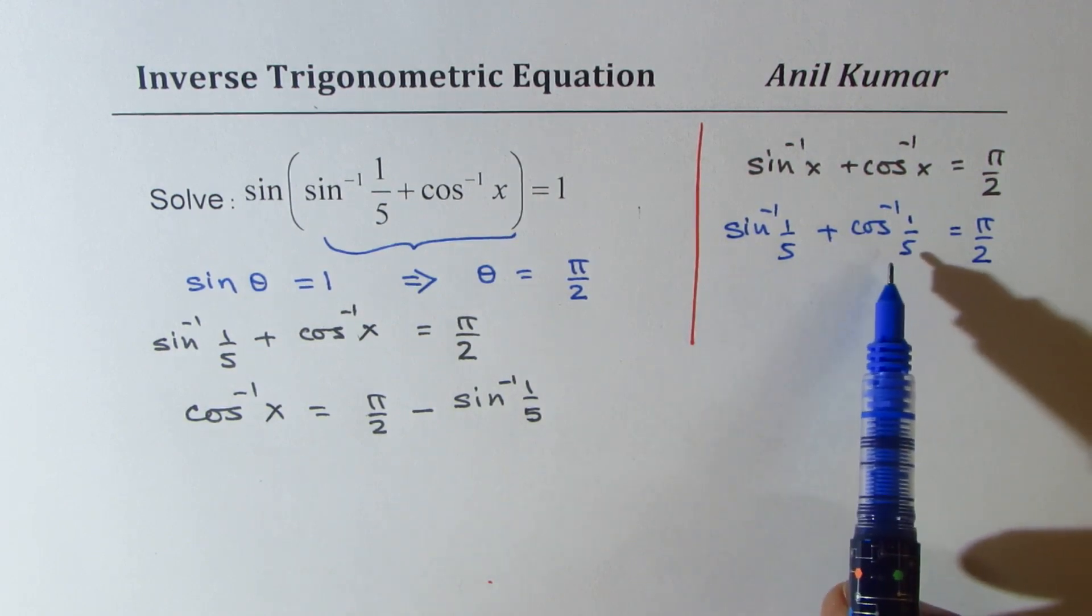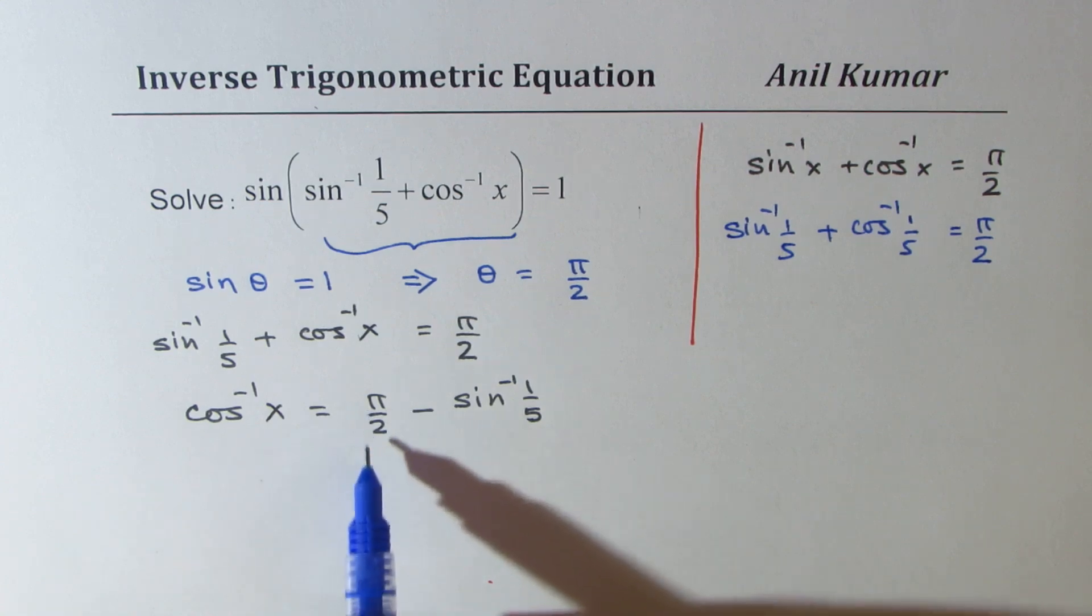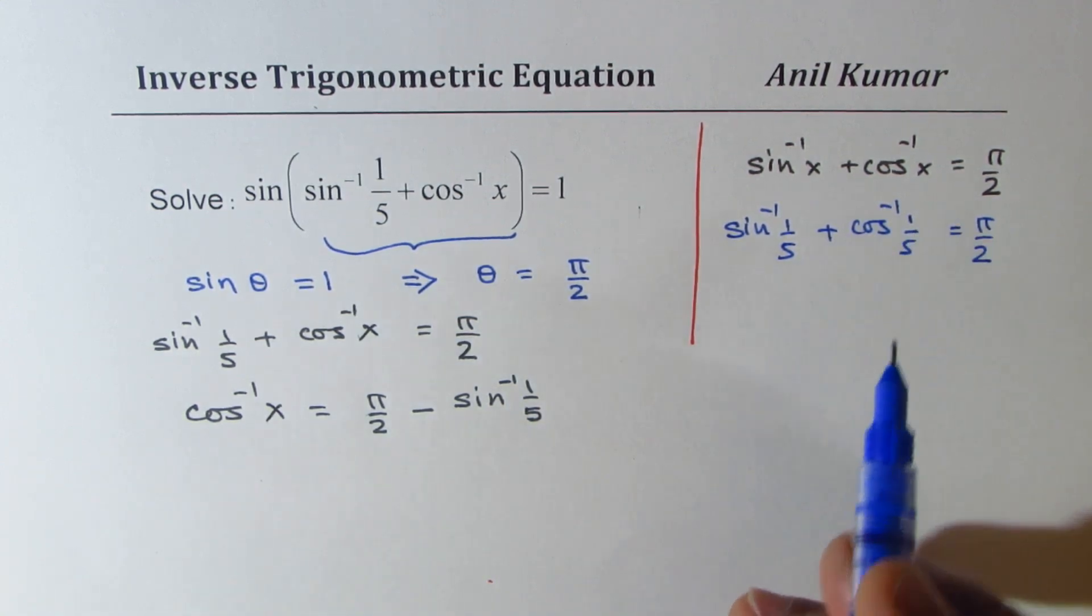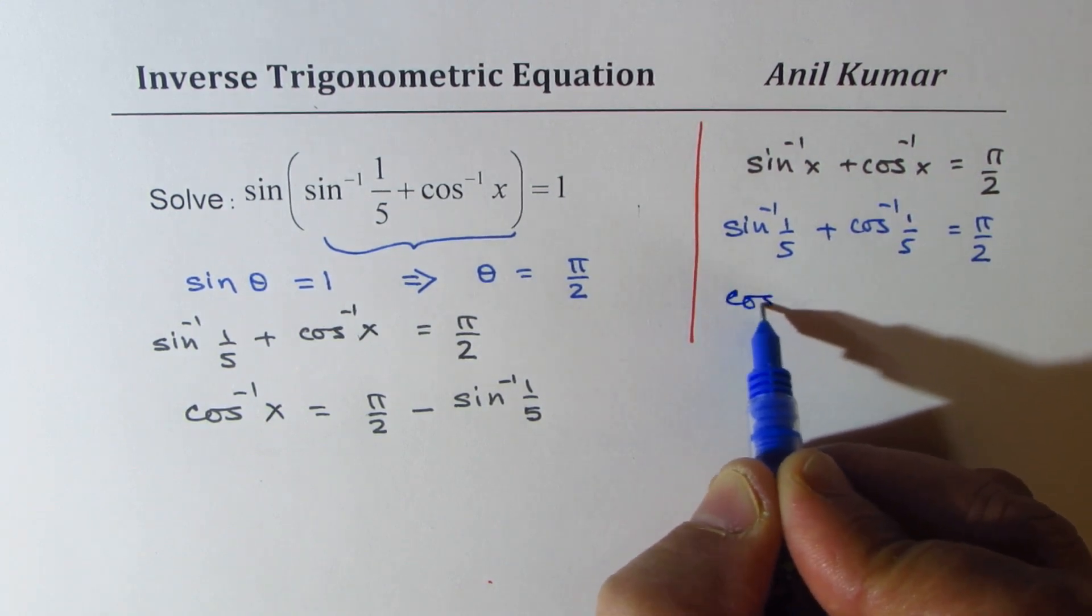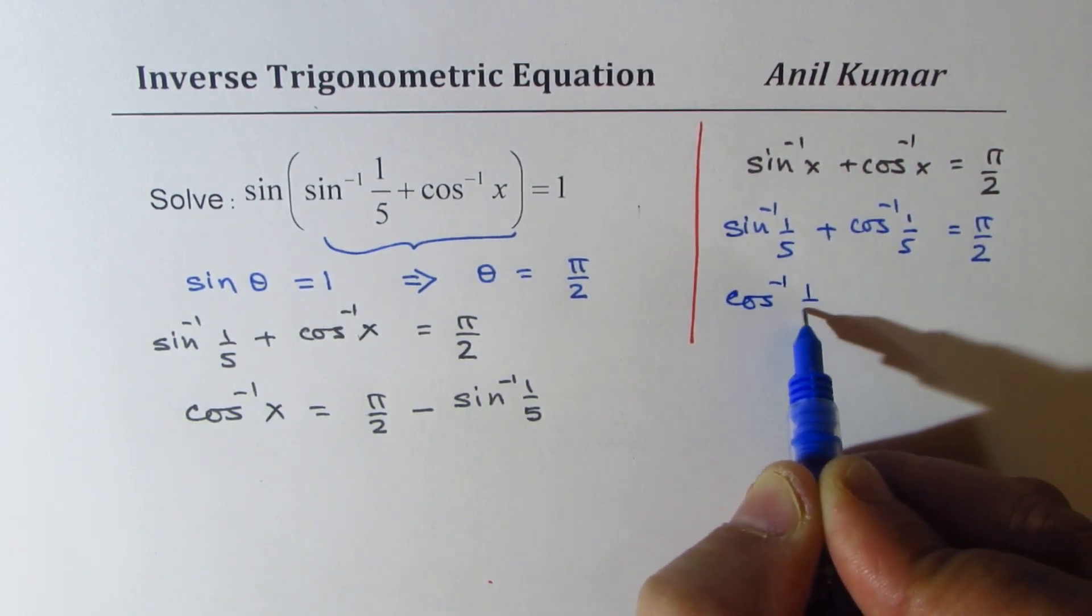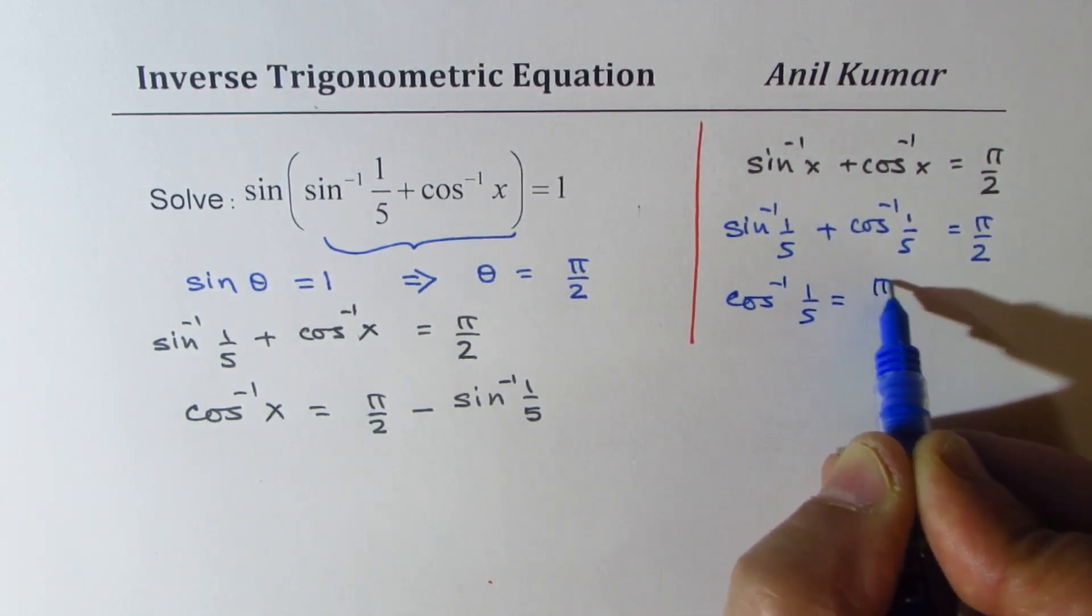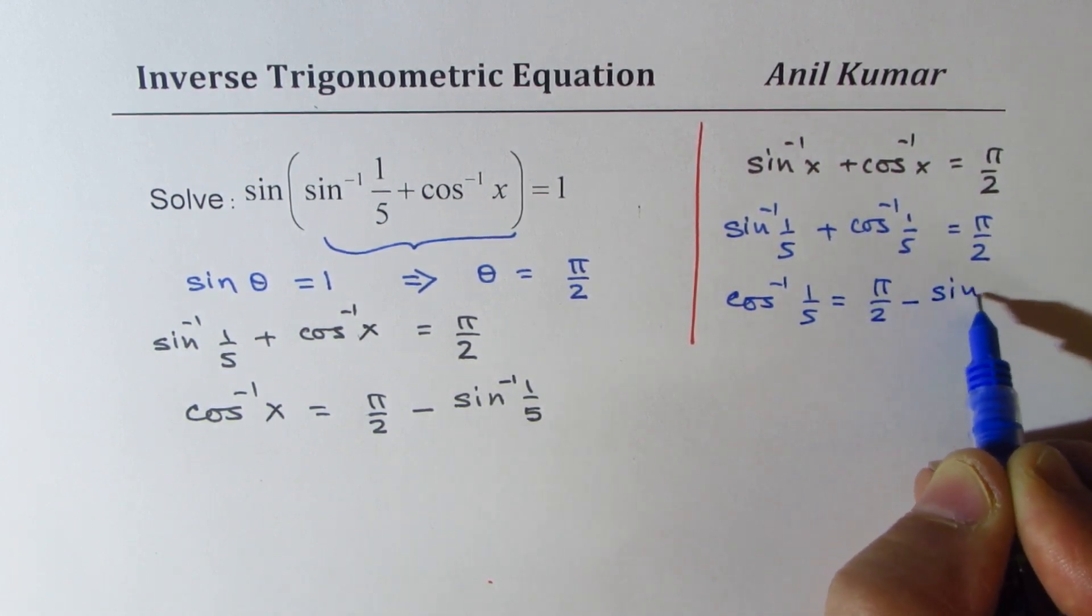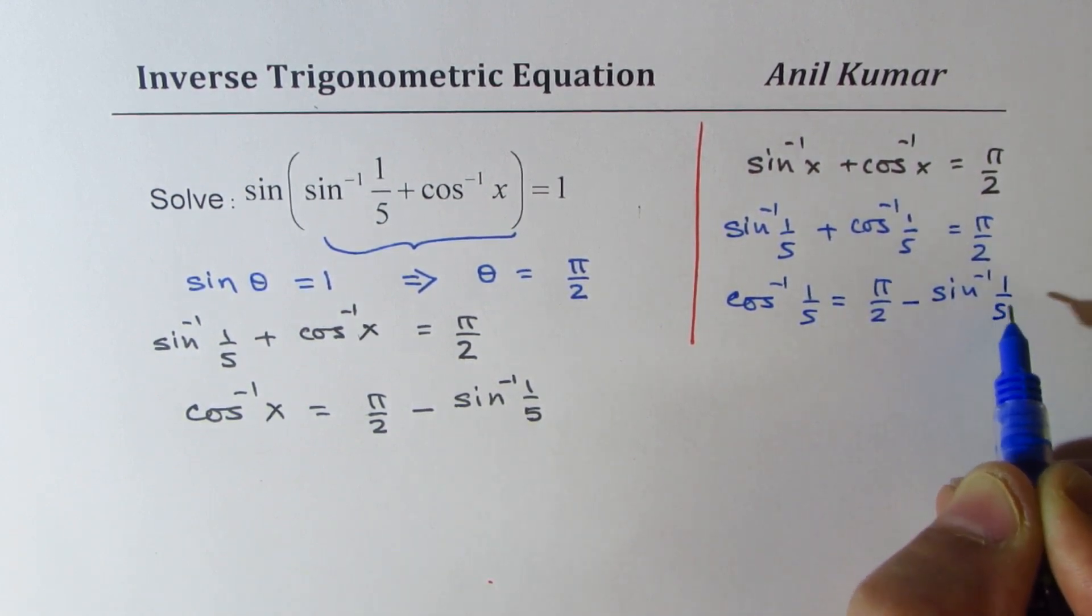Now, so that really means that I could write pi by 2 minus sine inverse 1 over 5 as cos inverse 1 over 5. So we could write this as cos inverse 1 over 5 equal to pi by 2 minus sine inverse 1 over 5.